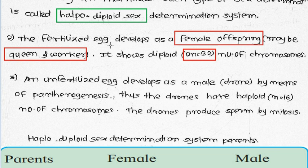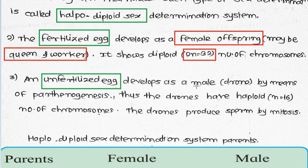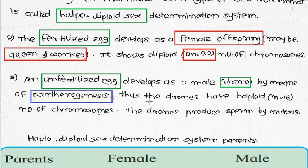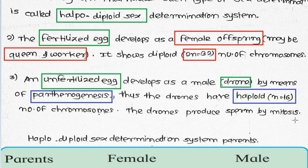Fertilized eggs are diploid - egg and sperm together are diploid. Unfertilized eggs develop as males (drones), and fertilized eggs develop as females such as queens and workers. The male drone develops by parthenogenesis - a process in which a new organism forms without fertilization. Since there is no fertilization in males, the unfertilized egg is haploid - only the egg is there with no sperm, so it remains haploid.